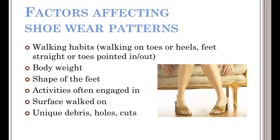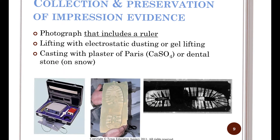There are some things that affect our shoe wear pattern — mostly because they affect the way we walk or something about our feet themselves. Our walking habits leave telltale signs: whether you walk on your toes or heels, with feet straight or toes turned in or out. Body weight determines where you put pressure across different parts of your feet, which determines where more distinctive marks appear. The shape of your feet, the activities you engage in, and the surface you walk on can all affect the pattern you leave behind. Anything unique about the shoe itself — stuff stuck in it, holes, cuts, or slashes — will also leave telltale prints in the impression.